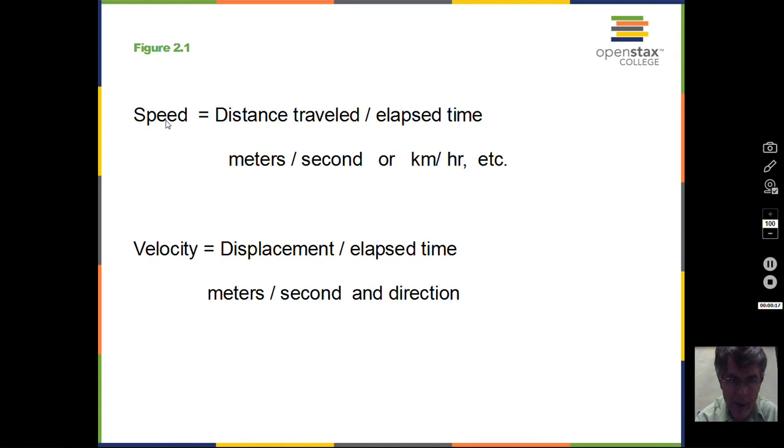And really we're talking about average speed here. If we have knowledge of the total distance traveled and we have knowledge of the elapsed time, then we divide those two numbers and we come up with the speed. And in the metric system, meters per second or kilometers per hour will be common results.